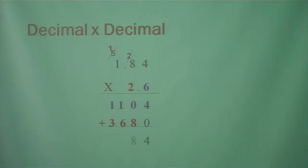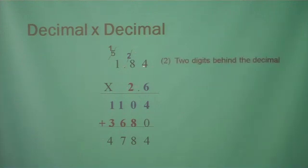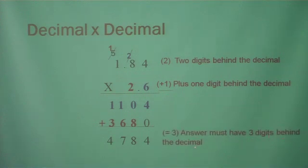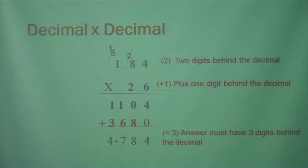Add them up: 4, 8 plus 0 is 8, 6 plus 1 is 7, and 3 plus 1 is 4. Now we're going to do just like we did before, but we have 2 to look at. There are 2 digits behind the decimal in this number and 1 digit behind the decimal in this number, so we add them up. Our answer has to have 3 digits behind the decimal, so our decimal goes here. This concludes our lesson on multiplication.